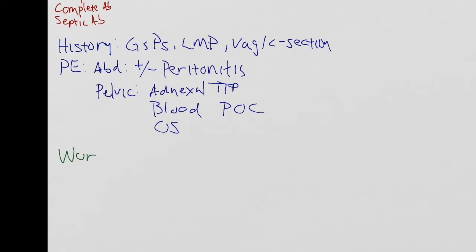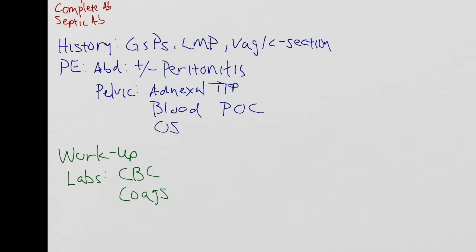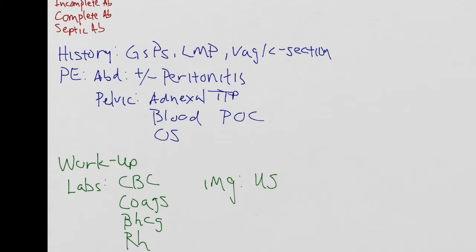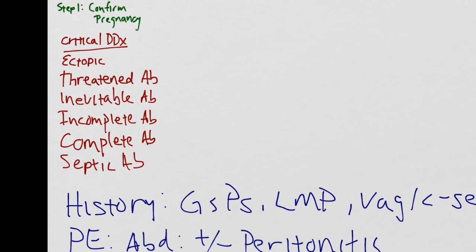Next, we'll focus on the workup for these patients. In terms of labs, you'd want to order a CBC to make sure the patient is not anemic and to evaluate platelets for thrombocytopenia. Coags can be checked to assess bleeding risk. A beta-HCG can be used to determine how far along in the pregnancy the patient is. An RH type is important to determine whether you need to give RhoGAM. It's also important to get a UA to assess for UTI, as well as a vaginal wet mount. For imaging, an ultrasound should be performed to see if there is a viable intrauterine pregnancy.